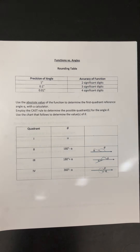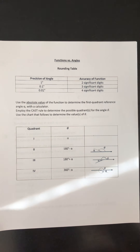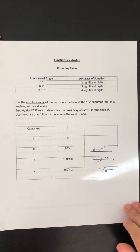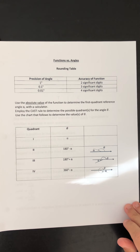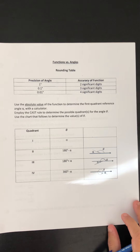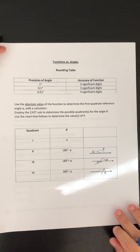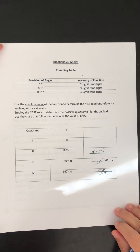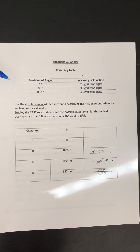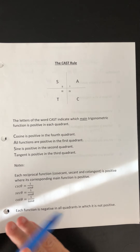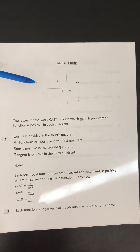Good morning. This is the last lesson in our trigonometry unit. Today, we're focusing on functions versus angles, not restricted to quadrant one, but rather all angles theta less than or equal to 360 degrees. A reminder that we will be using the rounding table today again. We are going to require knowledge of the CAST rule, so hopefully you've already watched the short video on the CAST rule.